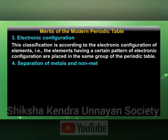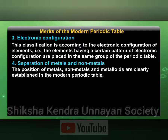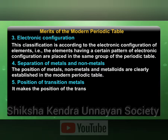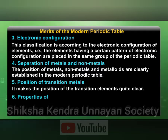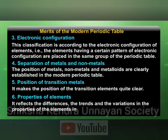Separation of metals and nonmetals: the position of metals, nonmetals, and metalloids are clearly established in the modern periodic table. Position of transition metals: it makes the position of the transition elements quite clear. Properties of elements: it reflects the differences, trends, and variation of properties of the elements in the periodic table.